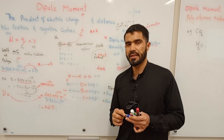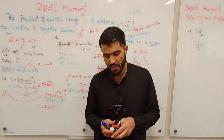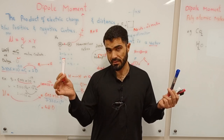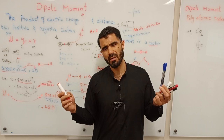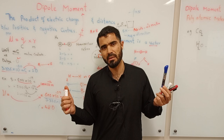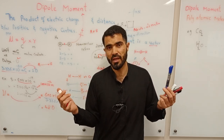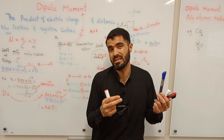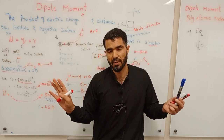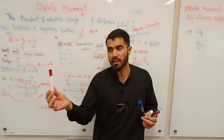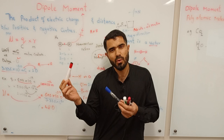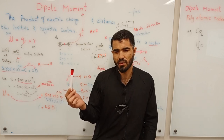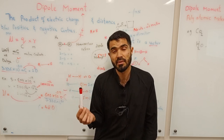Dipole moment is a vector quantity. There are two types of quantities: scalar and vector. Scalar quantities are described by magnitude only — for example, 1 kg of sugar; the amount alone is sufficient. Vector quantities require both magnitude and direction to be fully described.